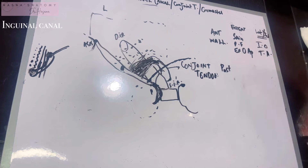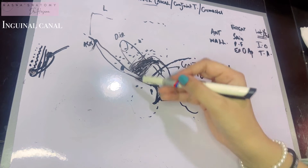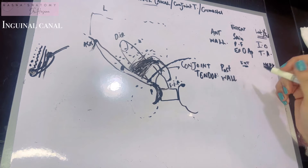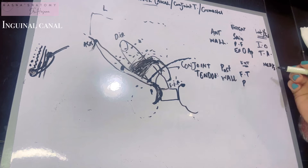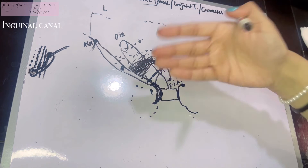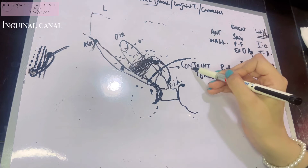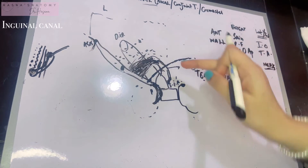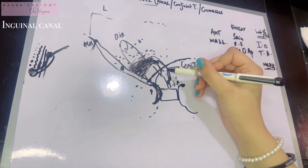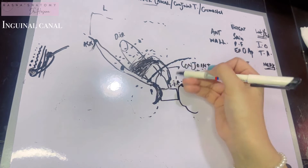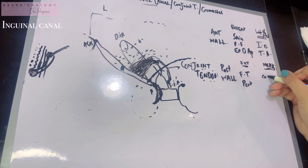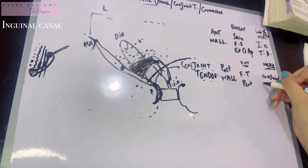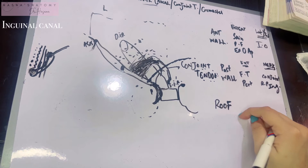The posterior wall also differs in areas. Throughout its whole extent, the posterior wall is formed by the fascia transversalis, the peritoneum, and the extra-peritoneal connective tissue. In the medial third, the posterior wall is additionally formed by the conjoint tendon — because the internal oblique arches above the inguinal canal and then, posteriorly, forms the conjoint tendon. Also present in the posterior wall is the reflected part of the inguinal ligament.